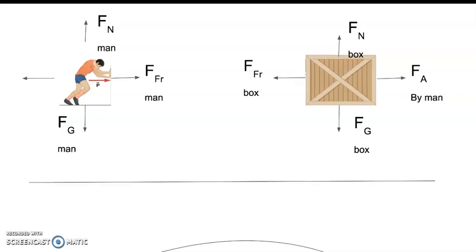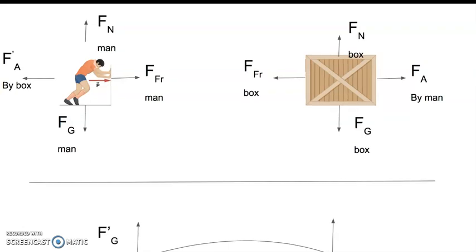Now when the man pushes on the box, the box is going to push back on the man. If the Earth is pulling down on the man, the man is also pulling up on the Earth. Same thing with the box — if the Earth is pulling down on the box, the box is also pulling up on the Earth. And if the surface is pushing up on the box with force normal, the box is also pushing down on the surface with force normal.